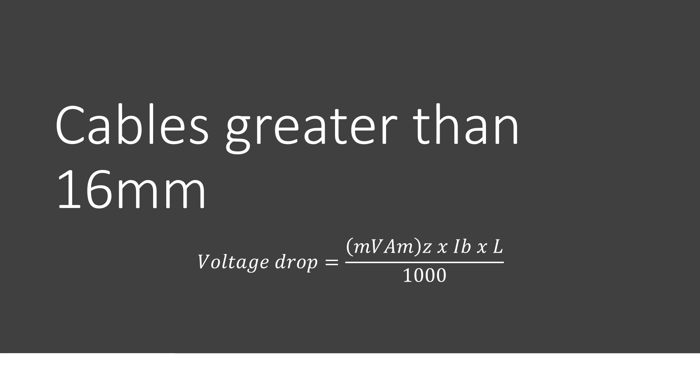So the equation becomes voltage drop equals millivolts per ampere per meter Z multiplied by design current, multiplied by length and then divided by 1000.